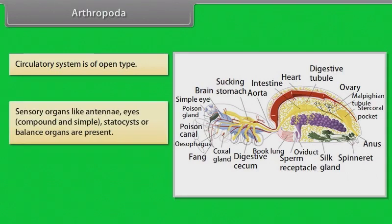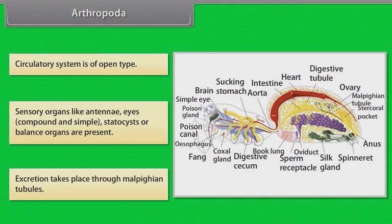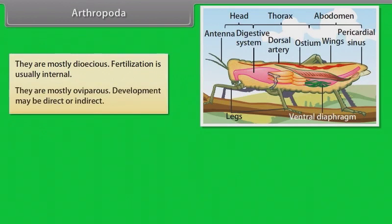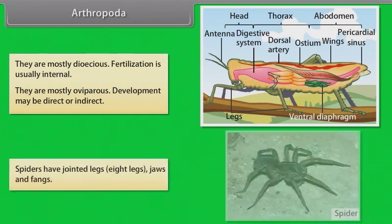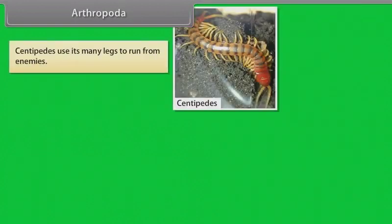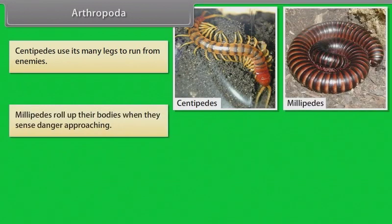Sensory organs like antennae, eyes (compound and simple), and statocysts or balance organs are present. Excretion takes place through Malpighian tubules. They are mostly dioecious. Fertilization is usually internal. They are mostly oviparous. Development may be direct or indirect. Spiders have jointed legs — eight legs — plus jaws and fangs. Centipedes use their many legs to run from enemies. Millipedes roll up their bodies when they sense danger approaching.